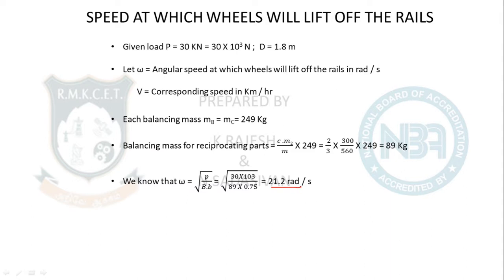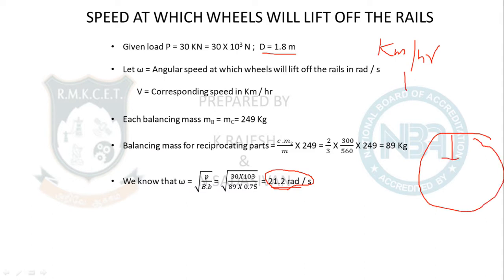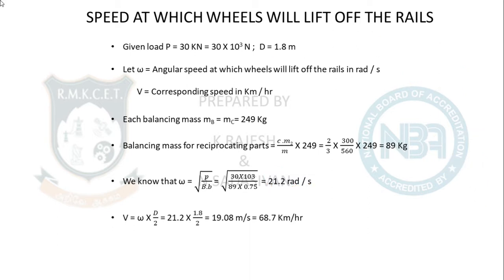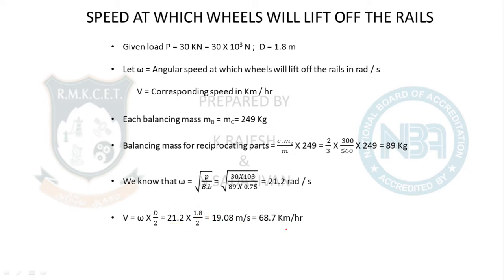ω = 21.2 rad/s. Convert to linear velocity: V = ω × r = 21.2 × 0.9 = 19.08 m/s (wheel radius = 1.8 ÷ 2 = 0.9 m). Convert to km/h: 19.08 × 3.6 = 68.7 km/h. If the train exceeds 68.7 km/h, the hammer blow will lift the wheels off the track.